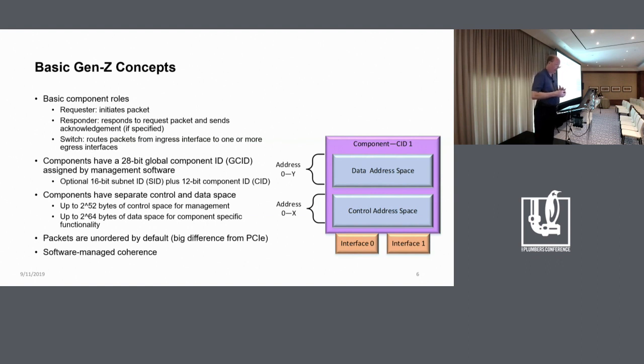Every component on the fabric has a 28-bit global component ID, GCID or GCID. It's assigned by management software. The first 16 bits of those are called the subnet ID, which is optional. And then there's a required 12-bit component ID. So if you want to build a small fabric, you don't have to have the full 28 bits. You can just do 12 of those. Components, every component on the fabric has two separate address spaces. There's the data address space, which is up to 2 to the 64 bytes in size on each and every component.